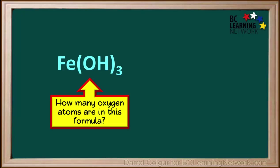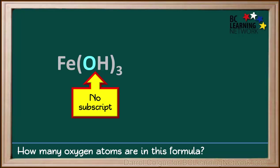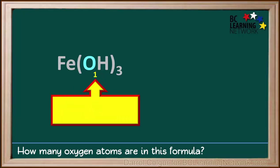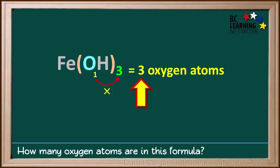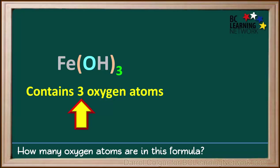Let's do another example. We're asked for the number of oxygen atoms in the formula Fe(OH)3. Looking at the oxygen atom inside the brackets, we see that there is no subscript to the right of it. If no subscript is written to the right of a symbol, it means there is one atom of that element. So we know there is one atom of oxygen inside the brackets. To find the total number of oxygen atoms, we multiply one by the subscript outside the right bracket. So we go one times three equals three oxygen atoms. The formula Fe(OH)3 contains three oxygen atoms.